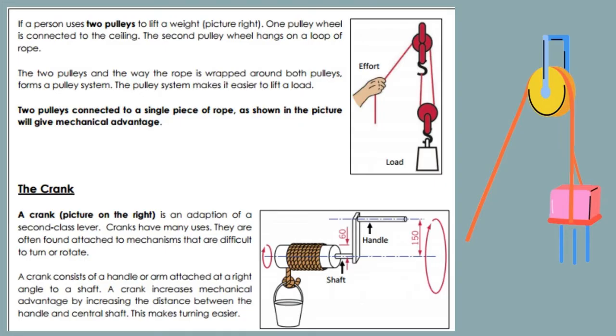The crank: A crank is an adaption of a second-class lever. Cranks have many uses. They are often found attached to mechanisms that are difficult to turn or rotate. A crank consists of a handle or arm attached at a right angle to a shaft.